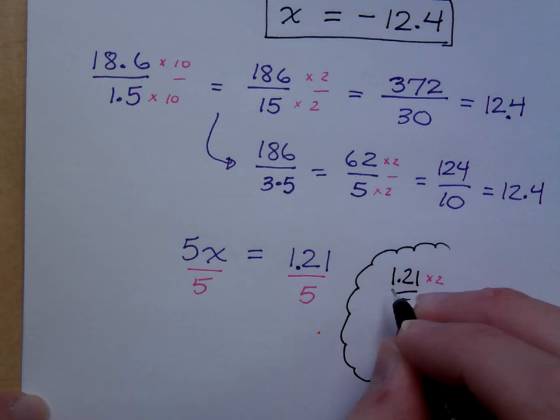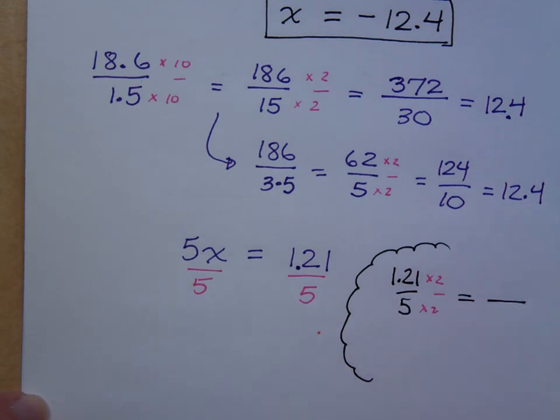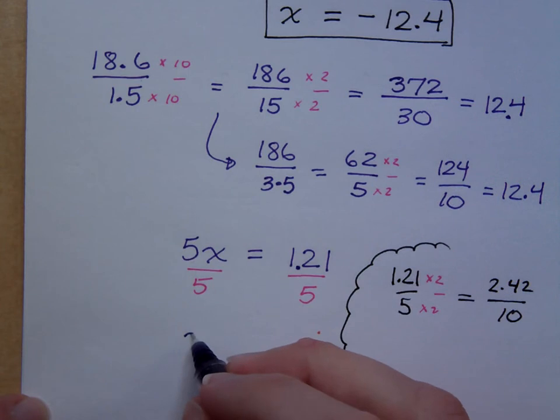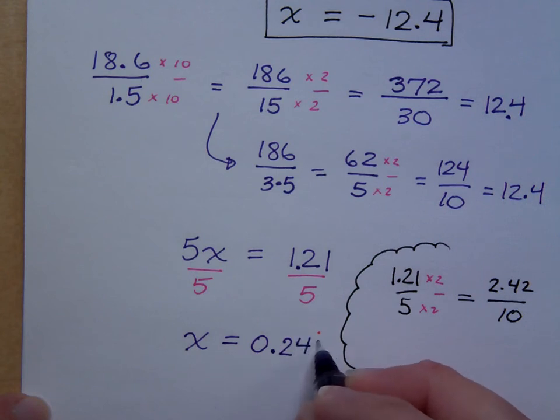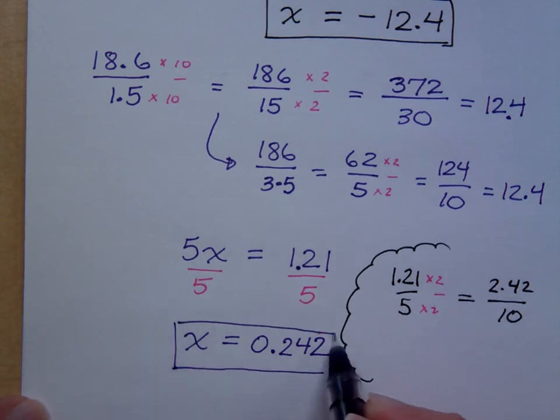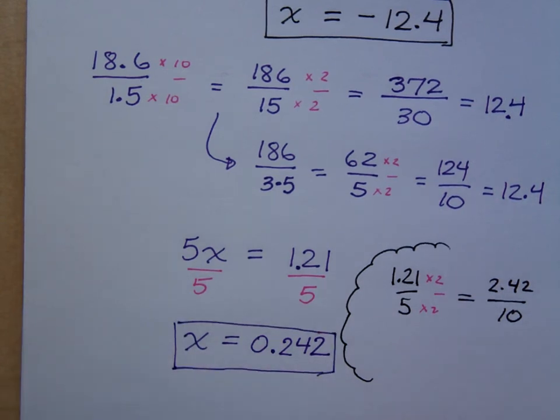What is 1.21 times 2? Think about it like it's a dollar twenty-one. If you have something that's a dollar twenty-one and you buy 2 of them how much is that? 2.42, and this is divided by 10 now isn't it? What did I say is the easy way to divide by 10? You just have to move that decimal point over 1. So 2.42 divided by 10 is 0.242. Did I need to use a calculator? No man, I got this.